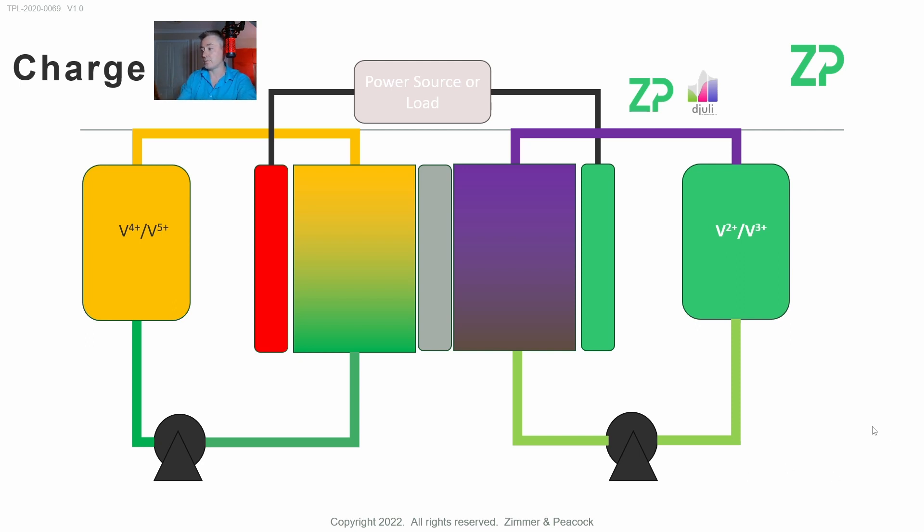Now we're going to charge it back up during the daytime again. We're pumping vanadium four plus (V4+). Vanadium four plus gives up electrons this time, and those electrons travel around the external circuit and travel into the vanadium three plus (V3+), which is also being pumped